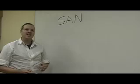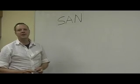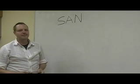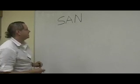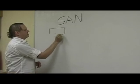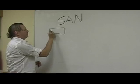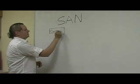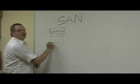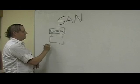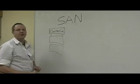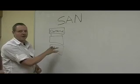We're going over SANs, storage area networks, and the types of SANs that are available. There are two basic types. You have a silo system, which has a controller, and then you add additional storage under your controller in order to build out your storage area network.